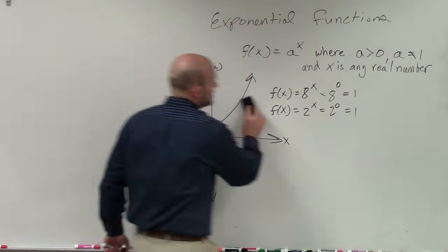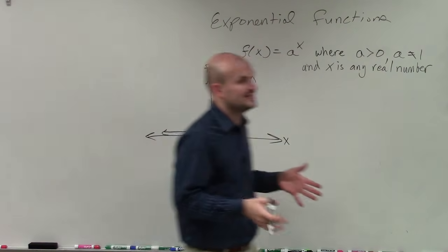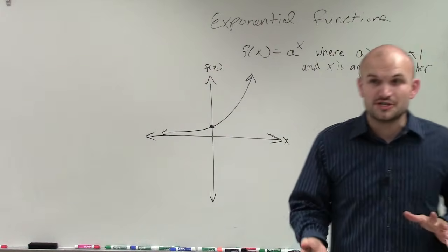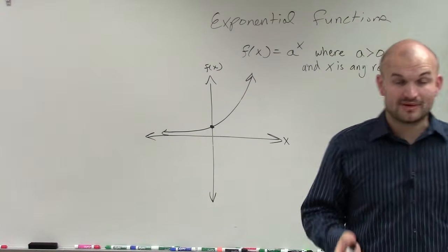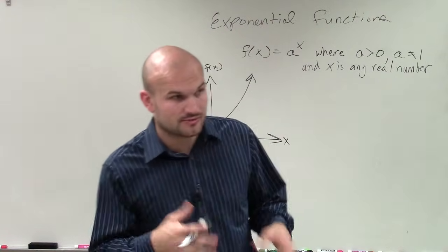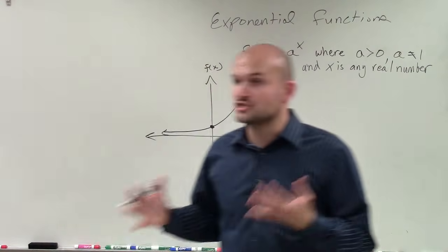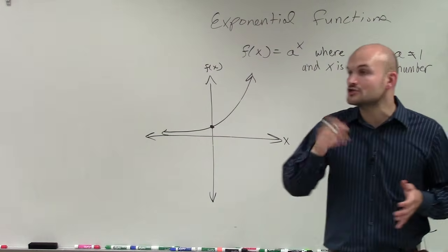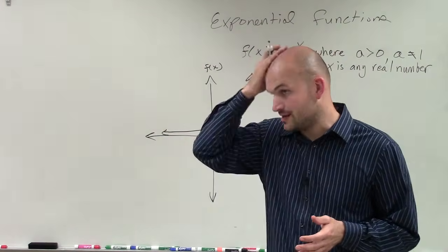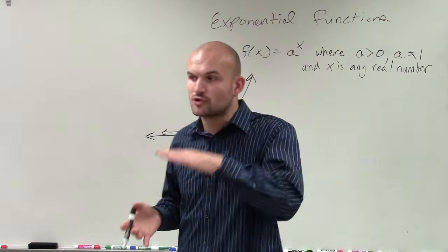So a couple things I want to talk about with this exponential graph. Mainly, I want to really get into the domain and range, and then also talk about the asymptote. I know some of you—we very briefly talked about rational functions, but in previous classes we talked about rational functions and asymptotes. Remember, asymptote is a line that your function is going to approach. And generally, you could say that they usually do not cross your asymptote. They're just approaching that.